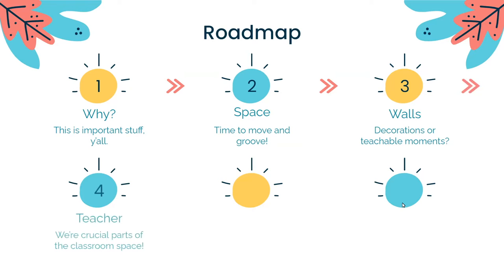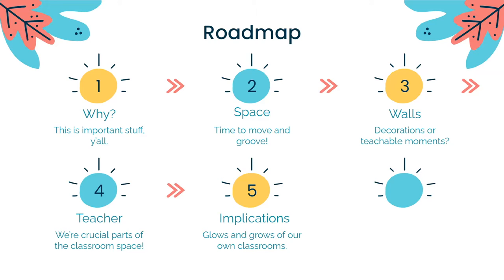Next, we're moving to number four — the teacher, us as educators. We are crucial parts of the classroom space. We facilitate the classroom culture, and we can interact with our students in very positive ways, so how can we do that? Number five, we're looking at some practical implications — like what do our own classrooms look like? How can we always keep improving our classrooms to help students learn and engage better? And then lastly, just a quick wrap-up conclusion, contact info, references, and our appreciation for you.